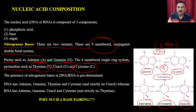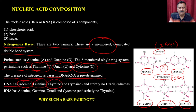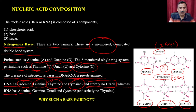The presence of nitrogenous bases in DNA and RNA is predetermined. DNA has adenine, guanine, thymine, and cytosine — it does not contain uracil. RNA has adenine, guanine, uracil, and cytosine — strictly no thymine.